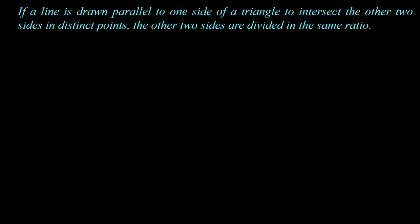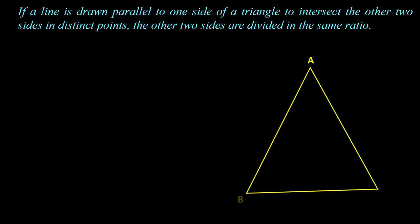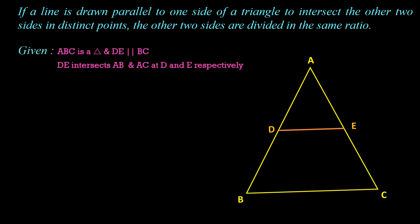For the proof, we again consider the statement: if a line is drawn parallel to one side of a triangle to intersect the other two sides in distinct points, the other two sides are divided in the same ratio. We consider triangle ABC, and draw a line DE parallel to BC. This parallel line intersects AB and AC at D and E respectively.